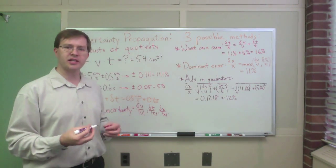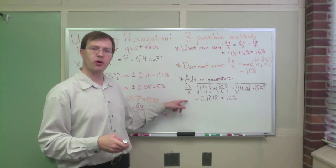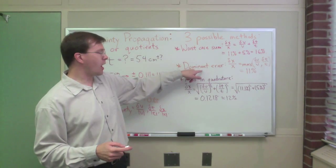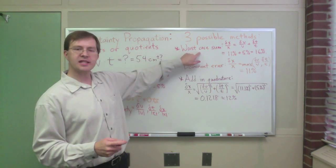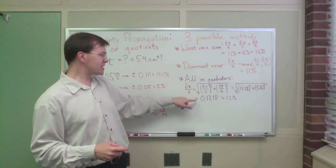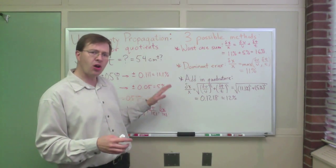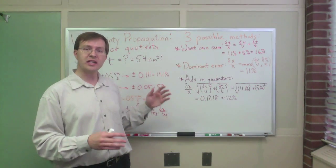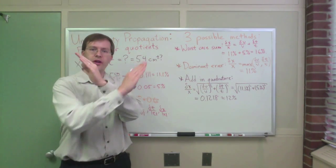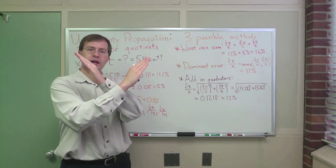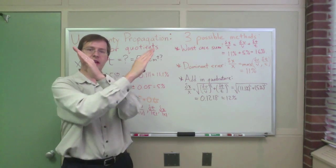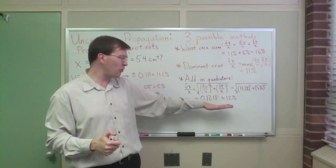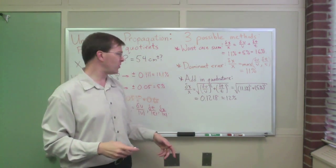Again, compare these things, these three approaches. The adding in quadrature approach, which is the gold standard, is always between the dominant error approach, which is basically a minimum, and the worst case sum, which is basically a maximum. This is in between. Remember, this all assumes, all these, the adding in quadrature in particular, and dominant error, assume that these are independent uncertainties, so that varying one of them is independent from varying the other. Errors in this measurement are independent of errors in that measurement. And if that's the case, then you think of these as sort of at right angles, metaphorically, to one another, and we get this deal.